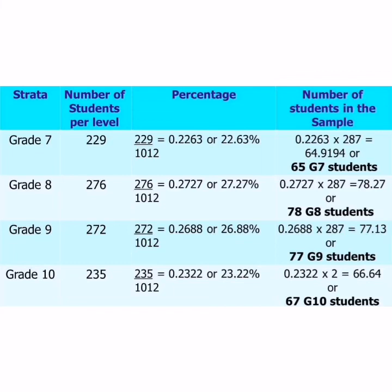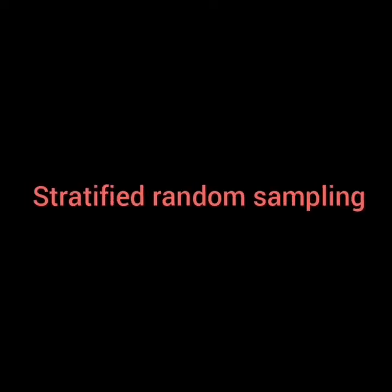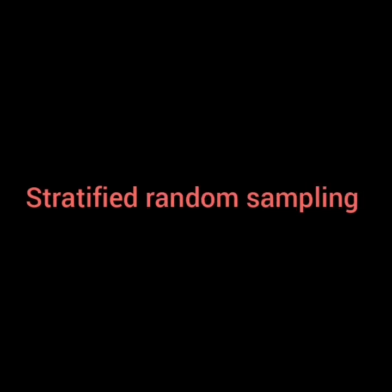To check, make sure you have 287 total students in the sample. Adding 65 plus 78 plus 77 plus 67 gives 287 — that's correct. That's it for today. I hope you learned something about stratified random sampling. Thank you for watching!